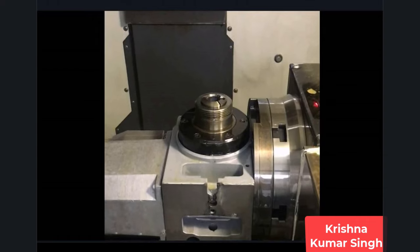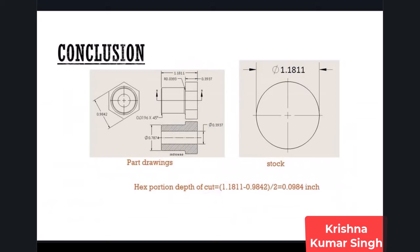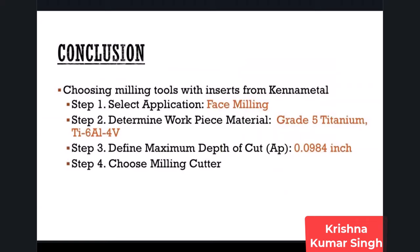For the lathe operation I used metric tools, and for milling I will cover inch tools. Looking at the stock material and the hex portion, the depth of cut is 0.0984 inches. Since the machining area depth of cut is larger, I will use an insert cutter rather than a solid tool. In Step 1, we select the application - in our case, we want to make a flat area, so we select face milling.